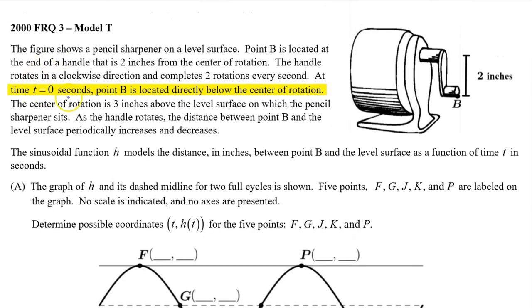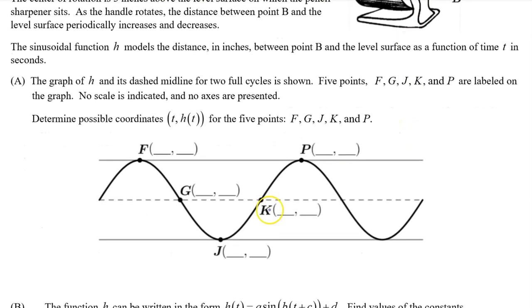At time t equals zero seconds, point B is located directly below the center of rotation. In other words, point B begins at its lowest value. So I need to pick a low point and call it t equals zero. I can either pick this point or this point or I can extend the graph one quarter period to the left and call that input value t equals zero.